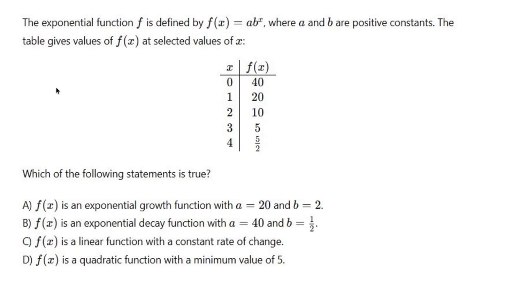When building an exponential function a times b to the x, a is your initial value when x equals zero. When x equals zero, it doesn't matter what b is, you get one, and so a times one is your value. In this case, when x is zero I get 40, so 40 is going to be my a.